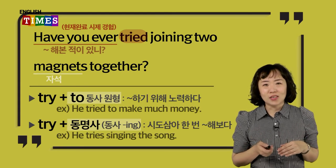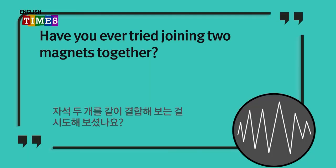Let me summarize the sentence: 'Have you ever tried joining two magnets together?' — meaning, have you tried combining two magnets? Listen carefully and repeat: Have you ever tried joining two magnets together?